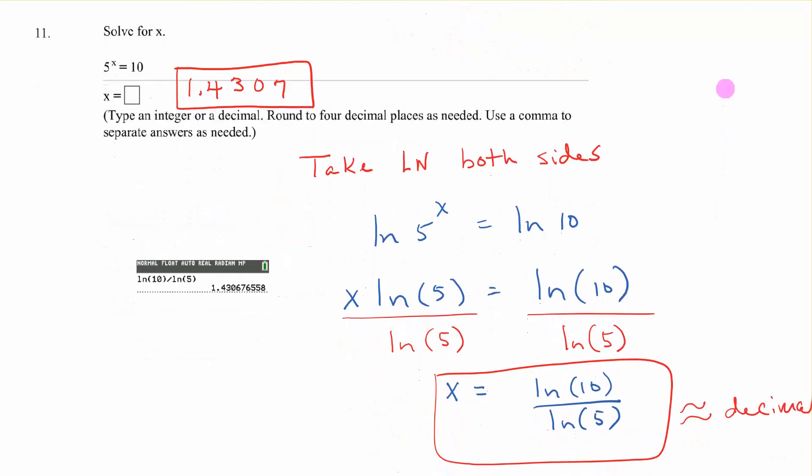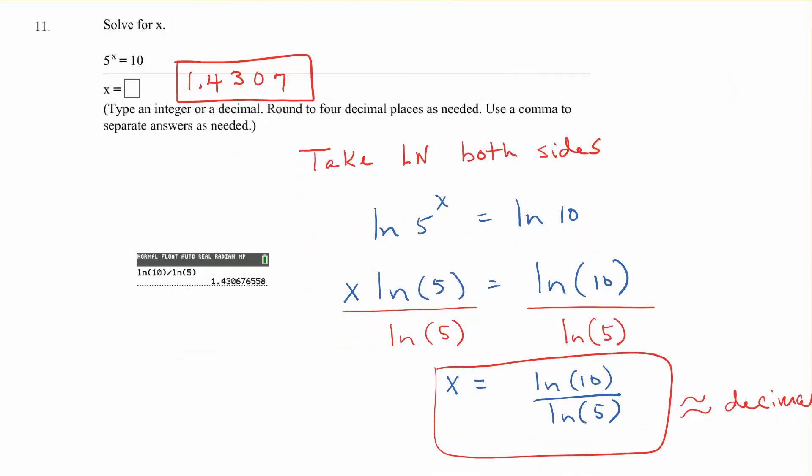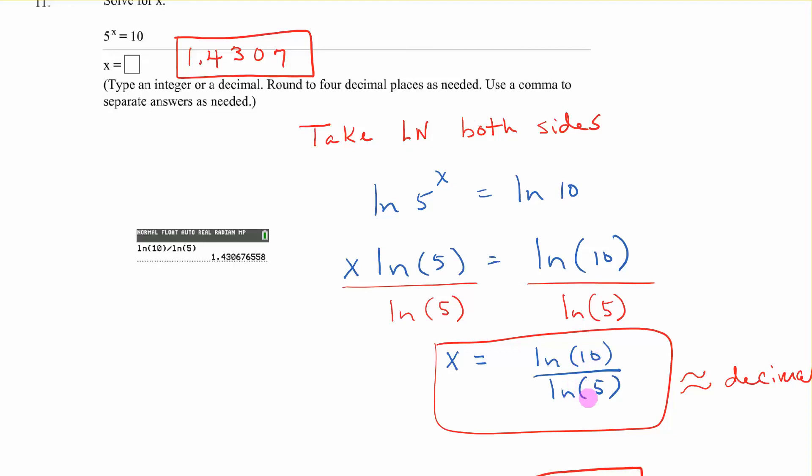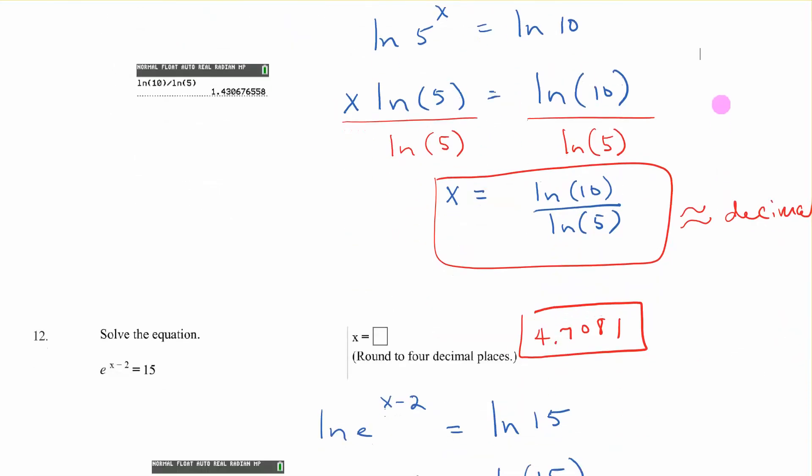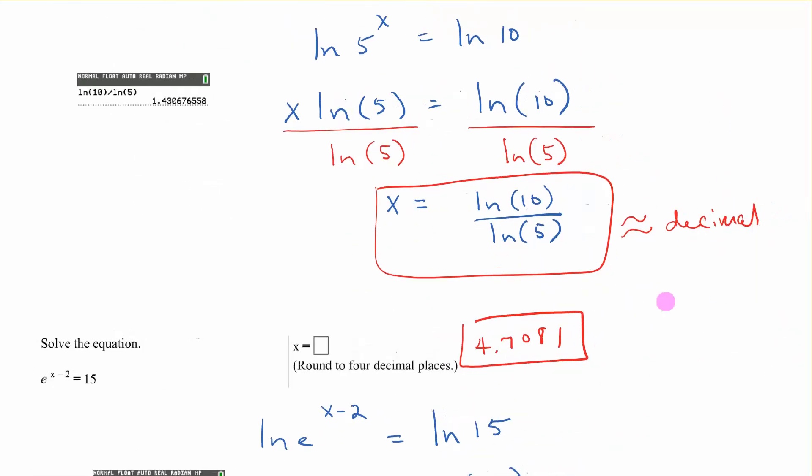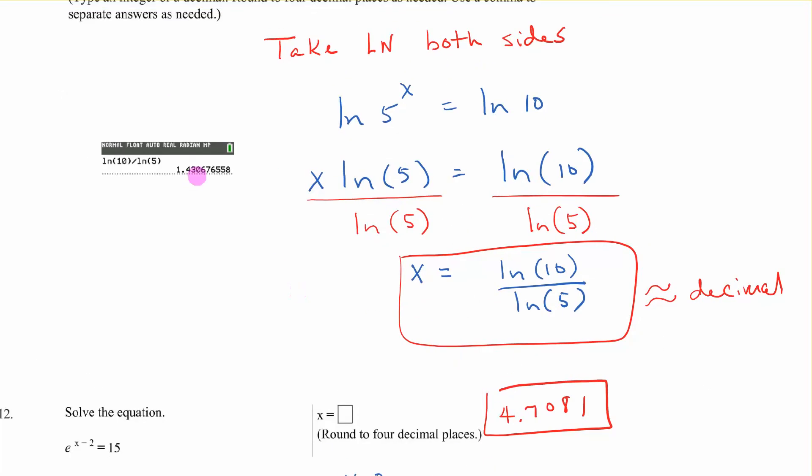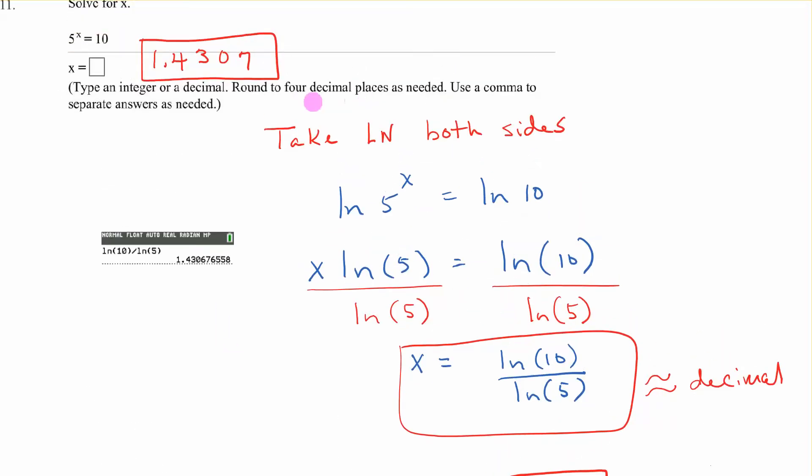Number 11. Here we have 5 to the x equals 10. So we're going to take the ln of both sides. When we do that, we have ln of 5 to the x equals ln 10. Use the power rule, x comes to the front. We then divide both sides by ln 5. So x is equal to ln 10 over ln 5. We do that in the calculator and we get the approximate of 1.430 and a bunch of decimals. It says 4 decimal places, so we'll round it to this.